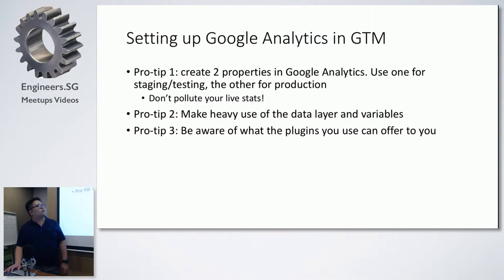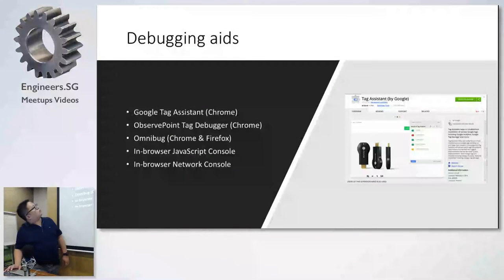Third, be aware of what the plugins can offer you in WordPress. Certain plugins like Contact Form 7 expose a lot of custom events you can use for analytics event tagging — for example, `cf7.submitted` for a successful form submission. So you don't need to rework tracking; the custom event is already there.